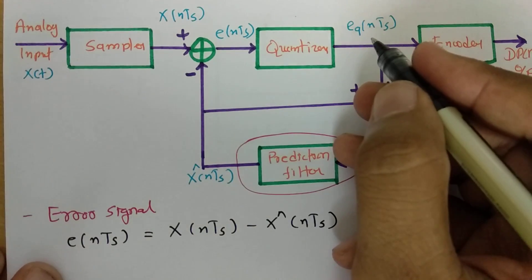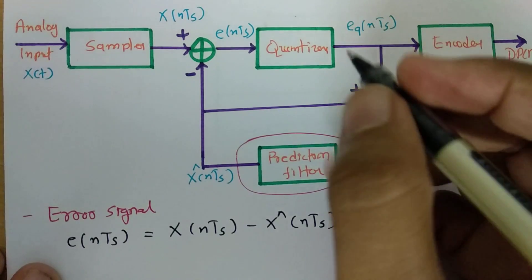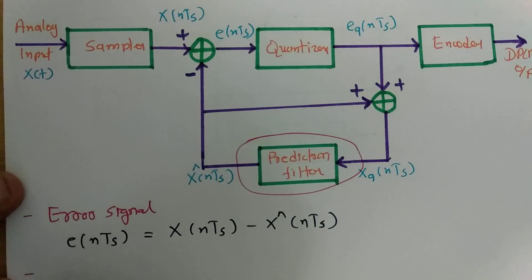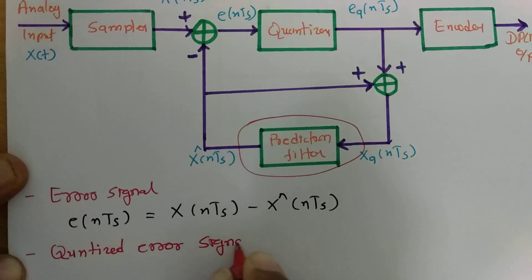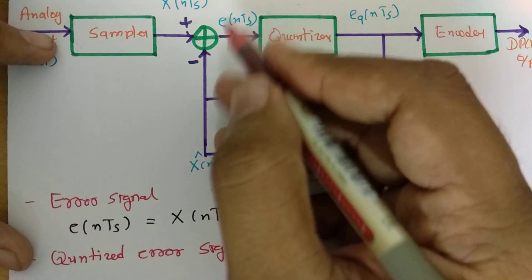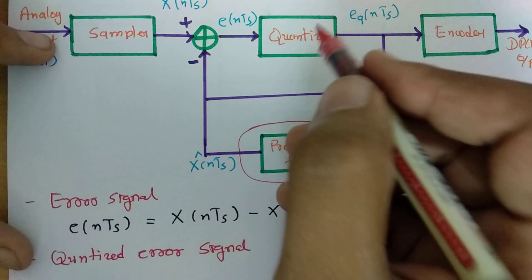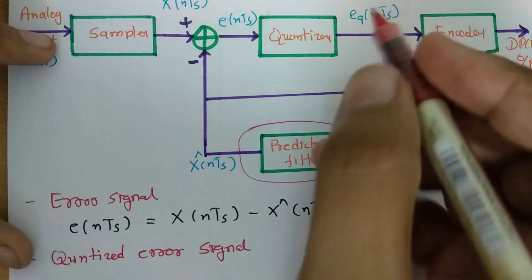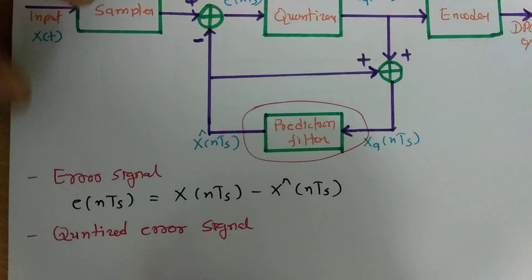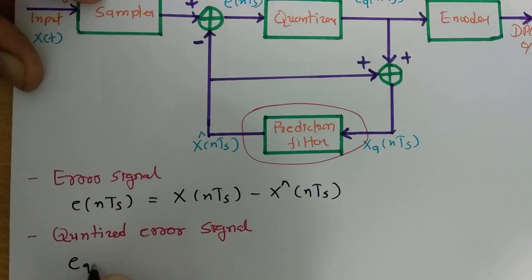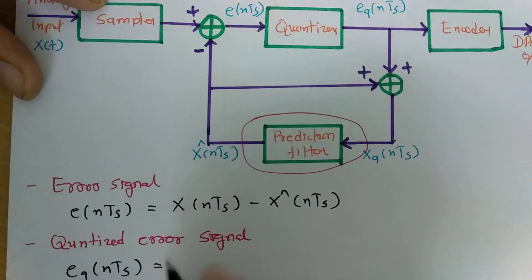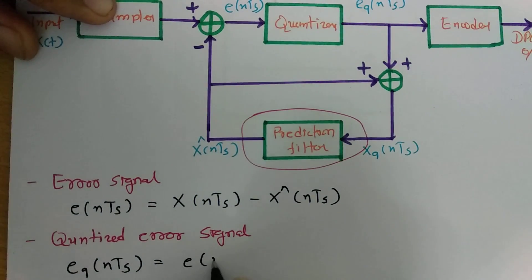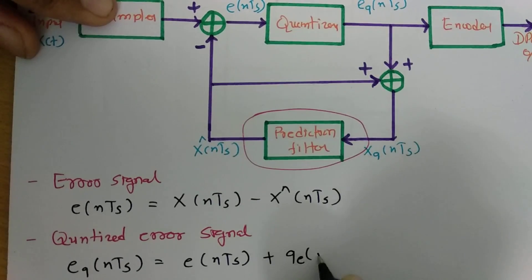The quantizer generates the quantized error output EQ(NTs). The quantized error signal has the input E(NTs) with some quantization error added by the quantizer. So the quantized error signal EQ(NTs) equals E(NTs) plus the quantization error QE(NTs).